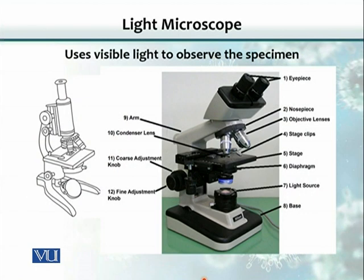A light microscope is not called 'light' because it doesn't weigh much — it is because it uses light as a source of illumination. That is the reason we call it a light microscope, and as you can see here, there are various parts.